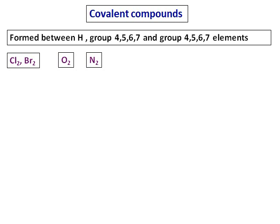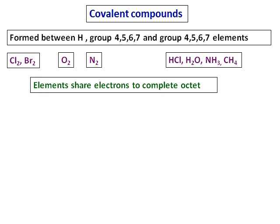Some examples are chlorine, bromine, oxygen, and nitrogen. There are also some compounds with hydrogen: HCl, water, ammonia, methane, etc.